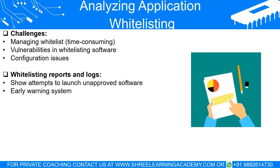Interpreting whitelisting reports and logs. The output reports and logs generated by a whitelisting solution provide valuable insights into the attempts made to launch unapproved software. This can be an early warning sign of a malware infection or an indication that users are trying to install unapproved software, which might be either legitimate work-related software or potentially risky applications. For example, a report might show multiple failed attempts to launch a certain application — this could be a sign that a user is attempting to install a non-whitelisted software for work purposes, or it could be an indication that a piece of malware is trying to execute. Careful analysis of these reports helps IT administrators investigate potential security breaches and guide the decision to approve additional software applications.